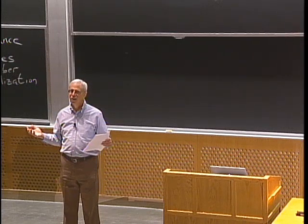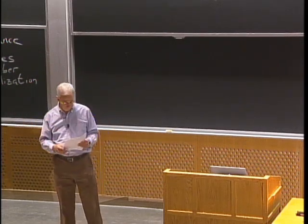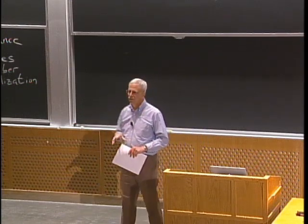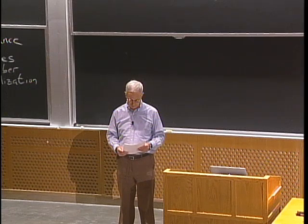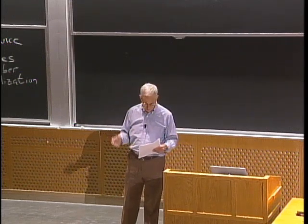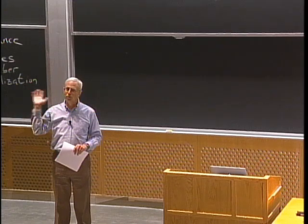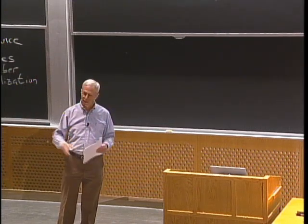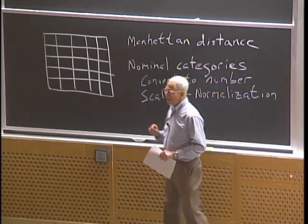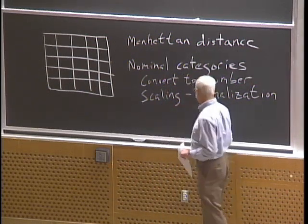How should you choose which features you want? You have to begin by thinking about the reason you're doing the clustering in the first place — what is it you're trying to learn about the mammals? As an example, I'm going to choose the objective of eating habits. I want to cluster mammals based upon what they eat, but I want to do that without any direct information about what they eat. Typically when we're using machine learning, we're trying to learn about something for which we have limited or no data.